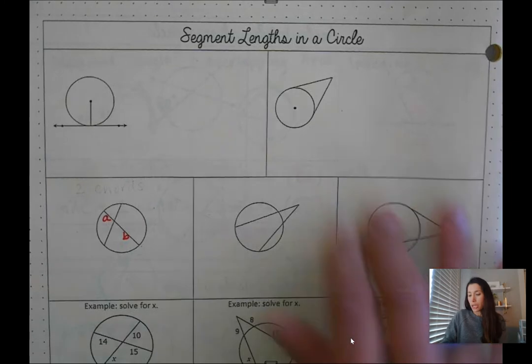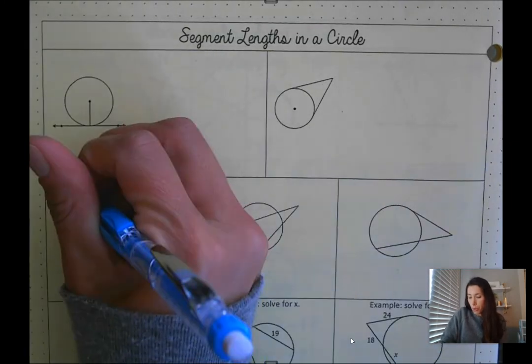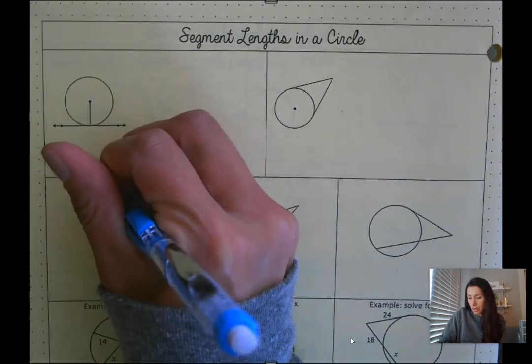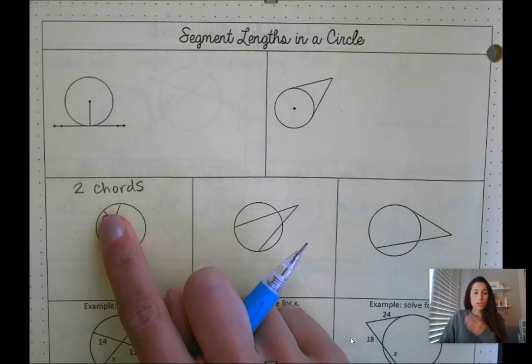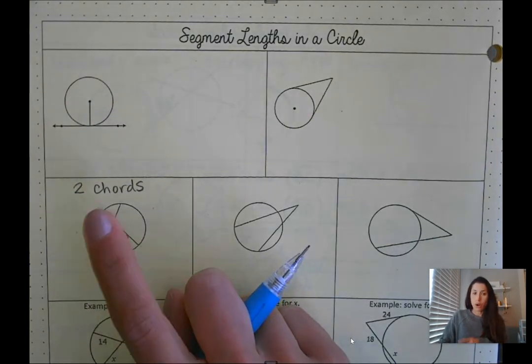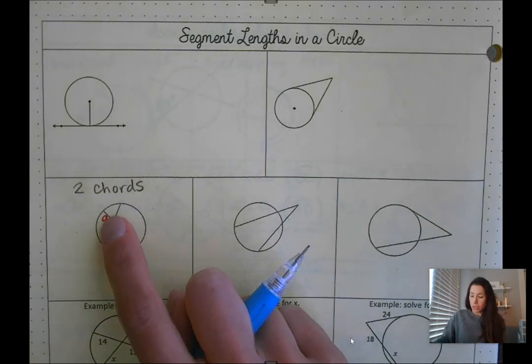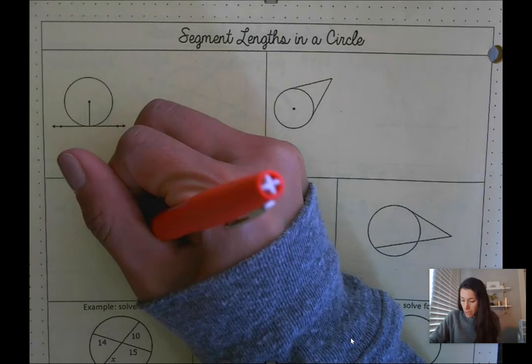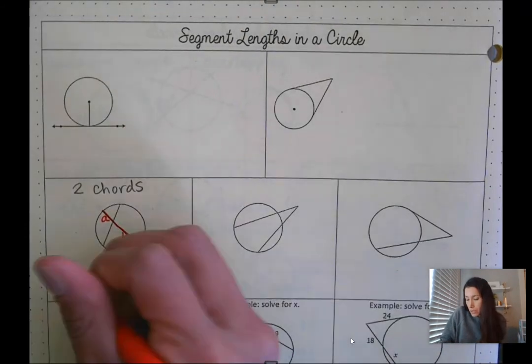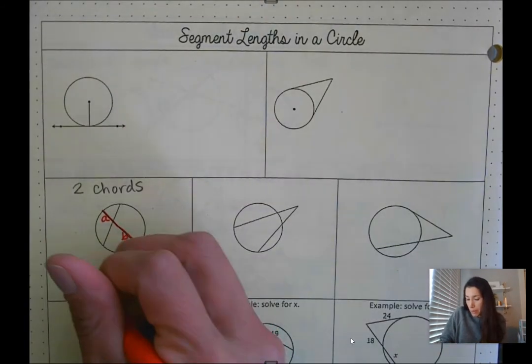We're going to start here with our two chords. Remember, the product of each chord if they intersect in a circle are equal to each other.